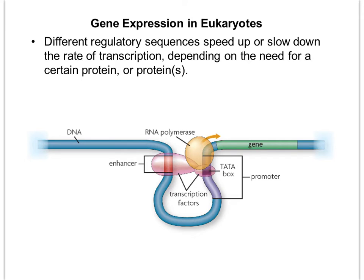If the operon is analogous to a light switch being turned on or off, then gene expression in eukaryotes is more like a dimmer switch. Think about a dimmer switch where you can turn the lights up or down — eukaryotes are going to either speed up or slow down the rate of transcription, and it's very rarely going to be a simple on/off situation in any or all cells.